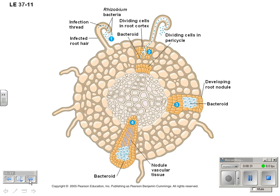The bacteroid infects the root hair, and dividing cells form a big nodule with vascular tissue. As the bacteria take nitrogen out of the air, they transport it into the plant.